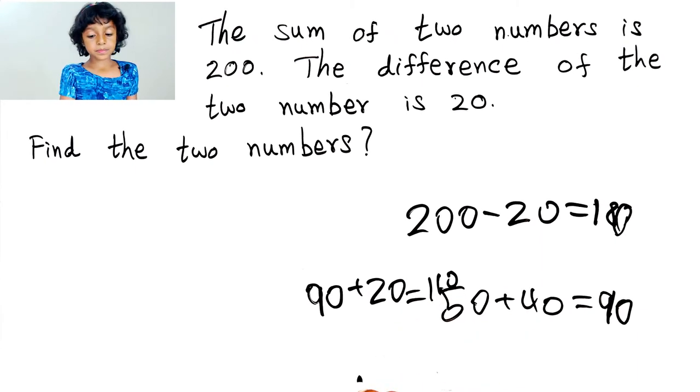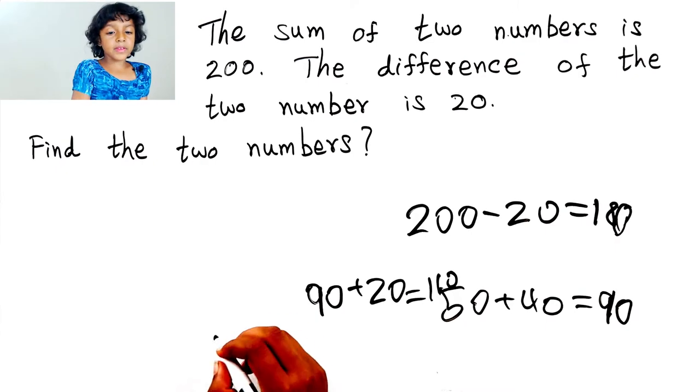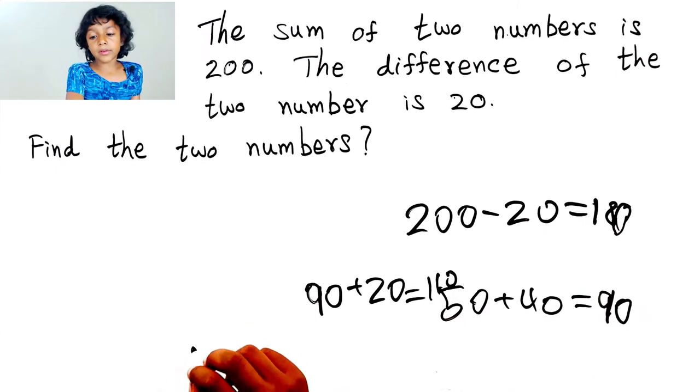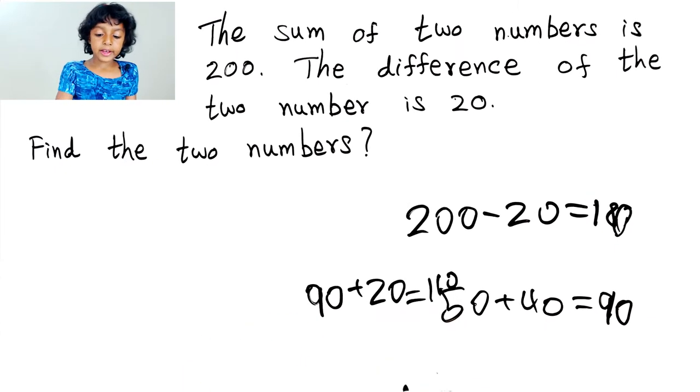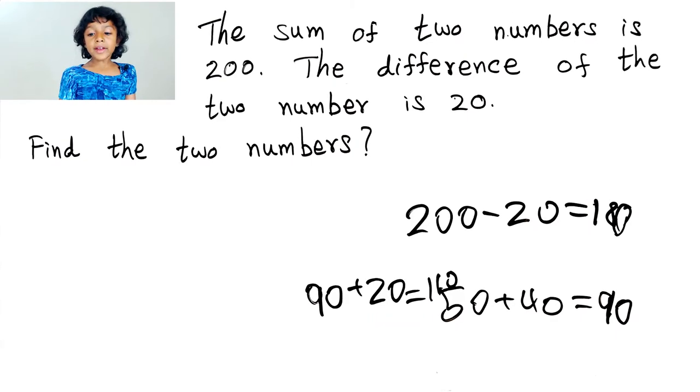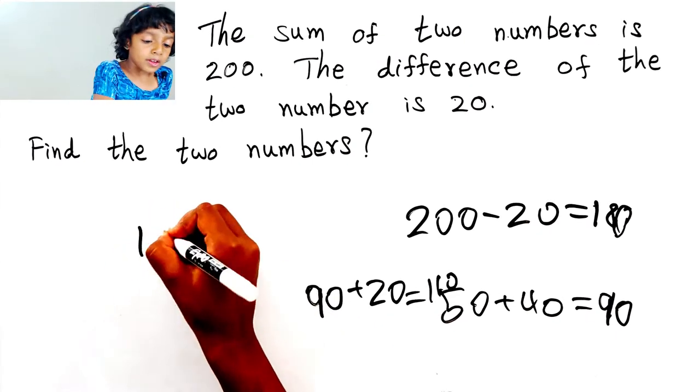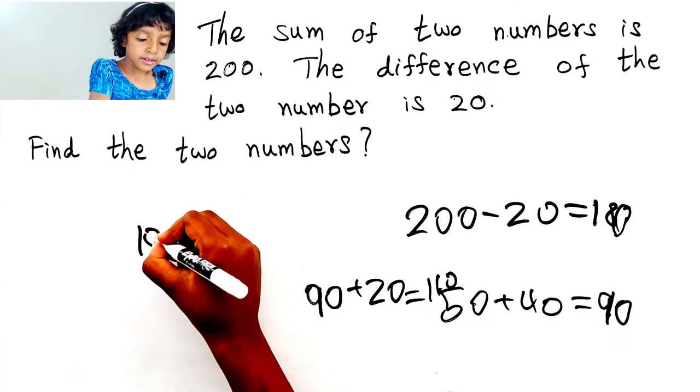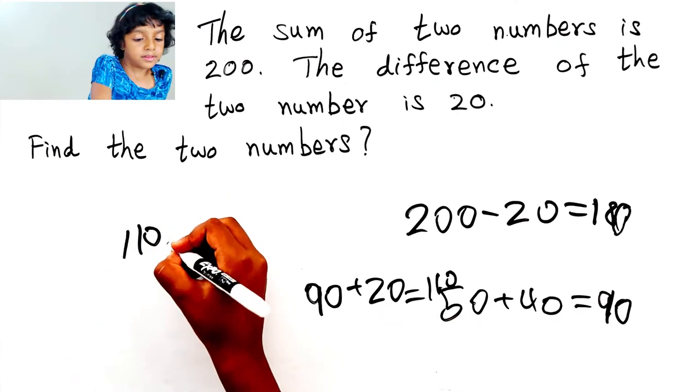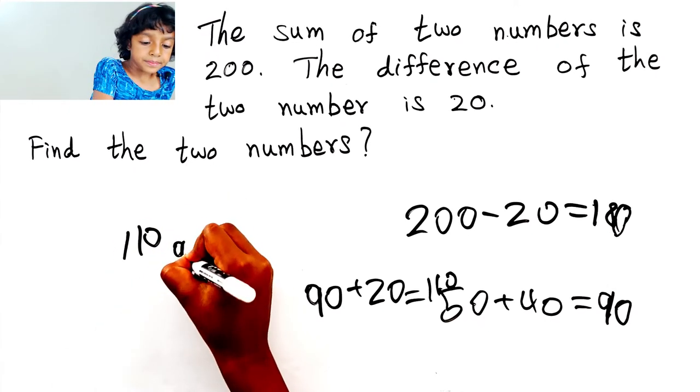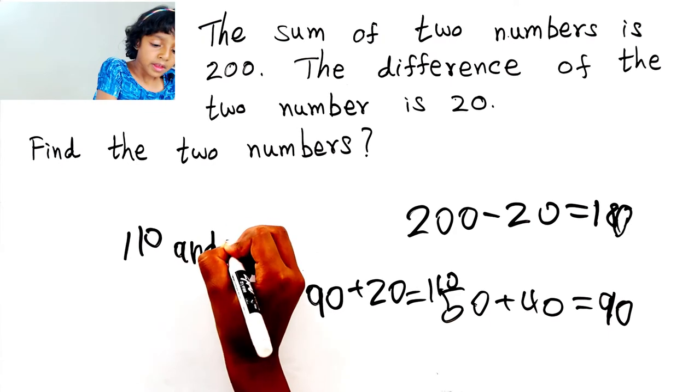So, that means 110 plus 90 equals 200. So, that means the answer is 110 and 90.